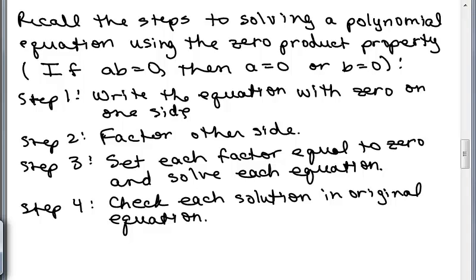Before learning how to solve a polynomial inequality, let's quickly review the steps for solving a polynomial equation using the zero product property. We write the equation with zero on one side, factor the other side, set each factor equal to zero and solve, and then check each solution in the original equation.